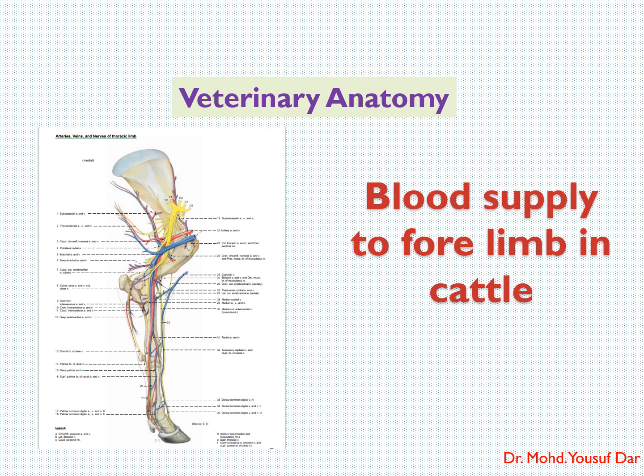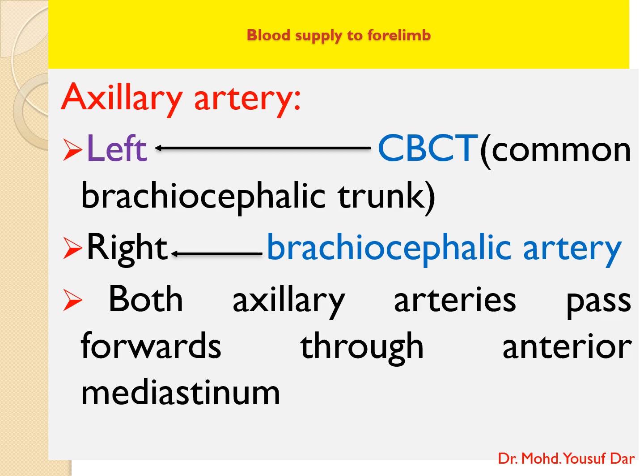Today's topic is blood supply to forelimbs in cattle. The axillary artery supplies blood to the forelimb — the left axillary artery supplies blood to the left forelimb, while the right axillary artery supplies blood to the right forelimb.